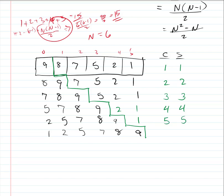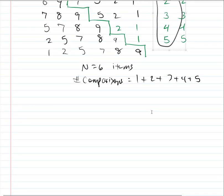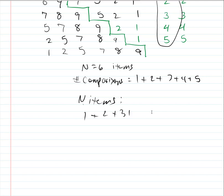For n equals six items, the total number of comparisons is the sum of these values: one plus two plus three plus four plus five. In general, for any n items the number of comparisons in the worst case will be one plus two plus three, all the way up to n minus one comparisons. How do we represent that in closed form?